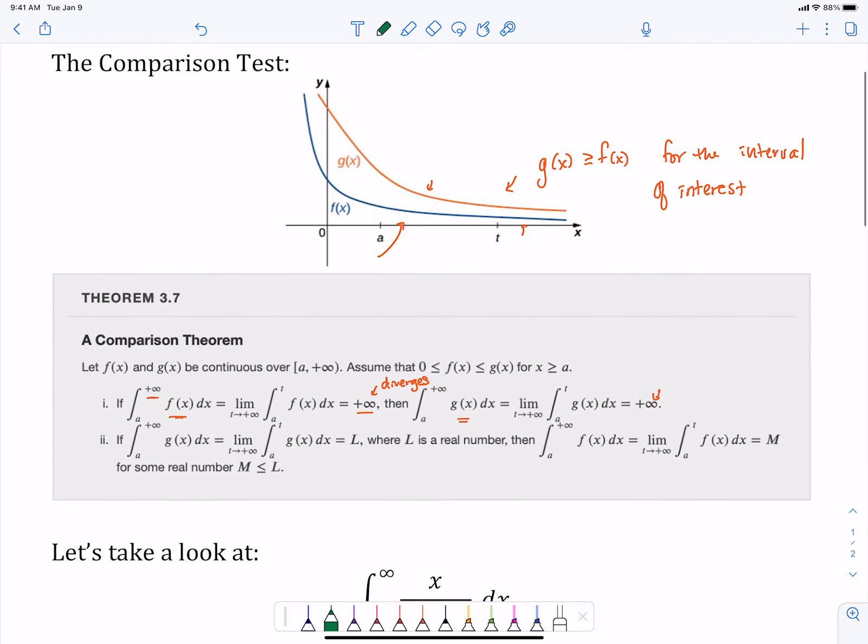So the second part of this says, well instead, say we're looking at this function that's above f(x), and g(x) converges. So g(x) has a bigger area than f(x), it converges to a number, then f(x) also is going to have to converge to a number. And that number it converges to is going to have to be less than or equal to the one that the function above it converges to.